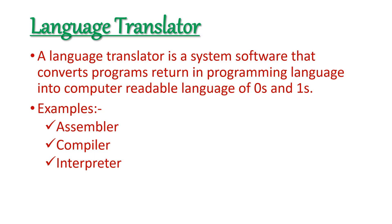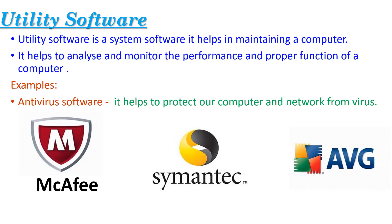Assembler converts programs written in assembly language to machine language. Compiler converts programs written in high-level language to machine-level language as a whole. Interpreter converts programs written in high-level language to machine-level language line by line.